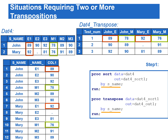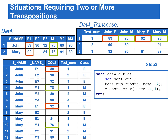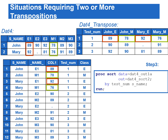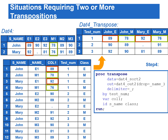In step 1, we transpose the input data set by S_name. In the next step, we create the variables testNOM and class from _name_ by using the SUBSTR function. In step 3, we sort this data by testNOM and S_name. In the final step, the second PROC TRANSPOSE is used to transpose the COL1 variable by testNOM, and to use name and class as the ID variables. The names of the transposed variables are separated by an underscore from the DELIMITER= option.